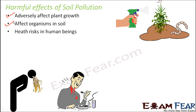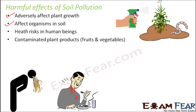Third, soil pollution poses health risks in human beings. When the soil is polluted, the plants growing on that soil and the fruits and vegetables obtained from those plants will also contain toxic substances. When those substances are eaten by human beings, they can cause various diseases — diarrhea, stomachache, and even major diseases. So a polluted soil can give rise to several contaminated plant products in the form of fruits or vegetables.